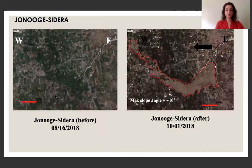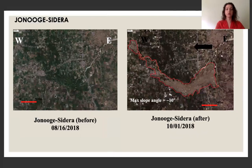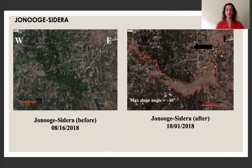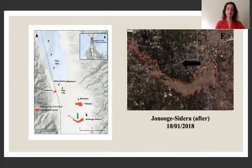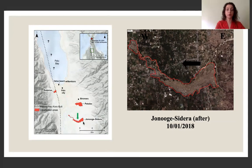Lastly, we have the village of Jono Oge Sidera. And as you can probably tell, this village has the largest liquefaction area, which had a maximum slope angle of 10 degrees, which was measured around this area here. And this inundated area was located furthest from Palu City.